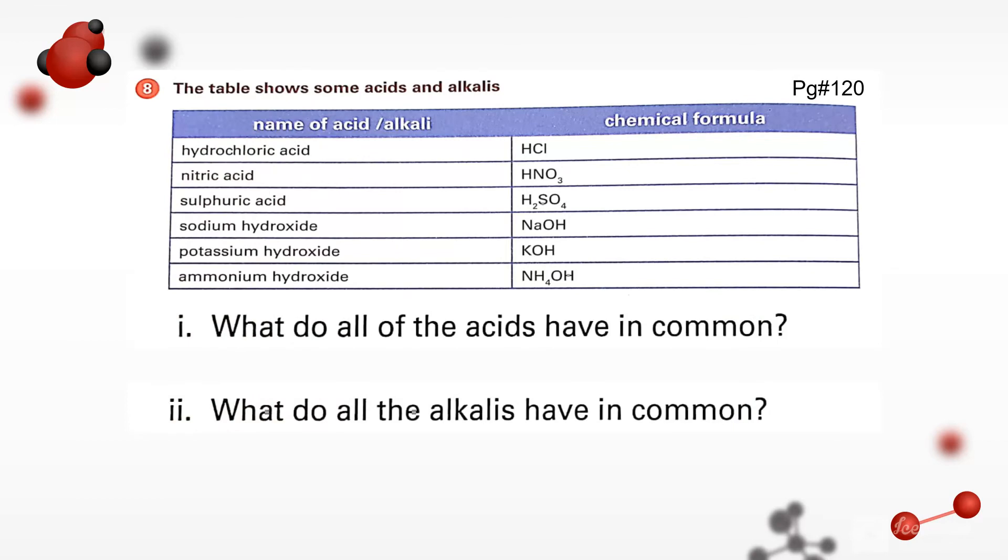Come to the eighth question. The table shows some acids and alkalies like hydrochloric acid, nitric acid, sulfuric acid, sodium hydroxide, potassium hydroxide, and ammonium hydroxide. What do all the acids have in common? So we will see that all the acids have hydrogen ions in common. That is why hydrogen ion is common in all of them.